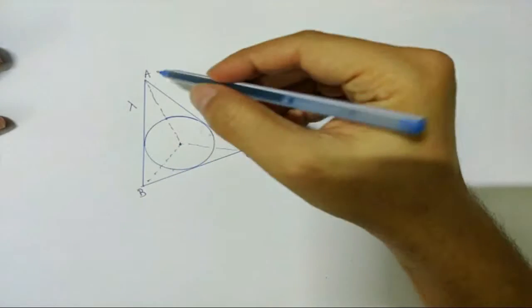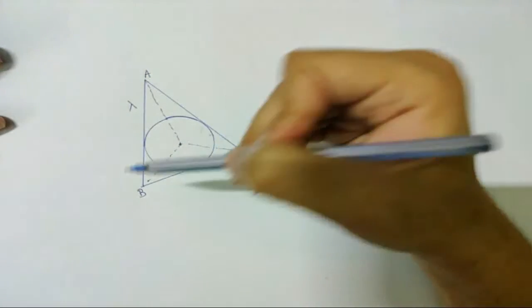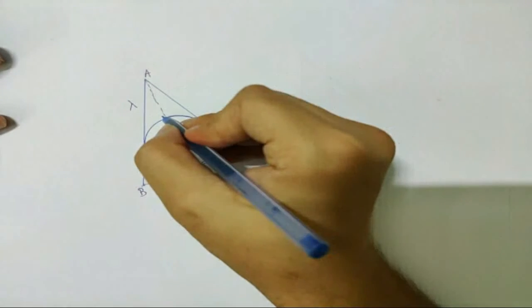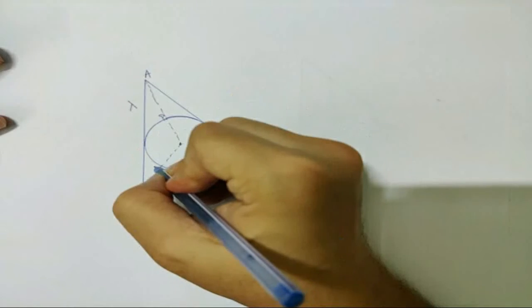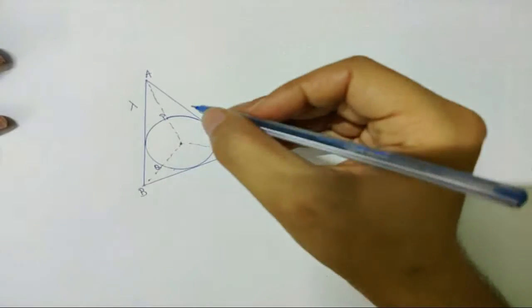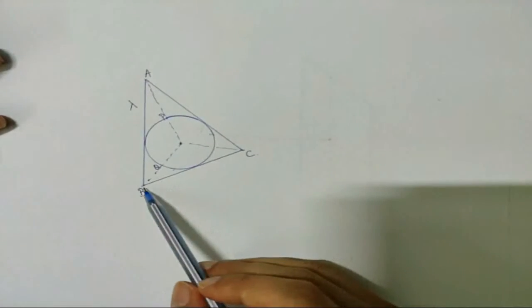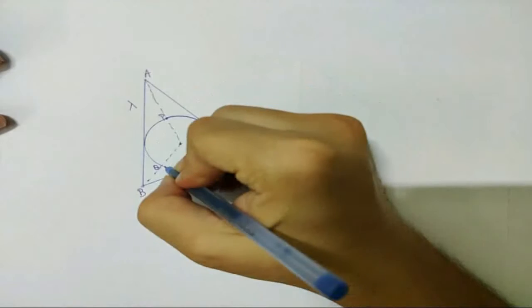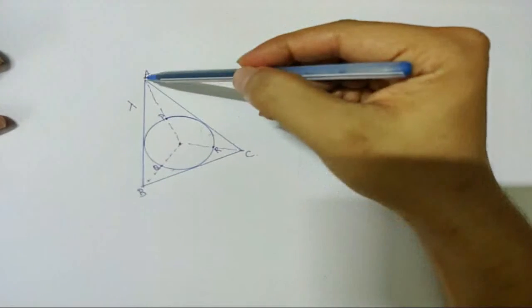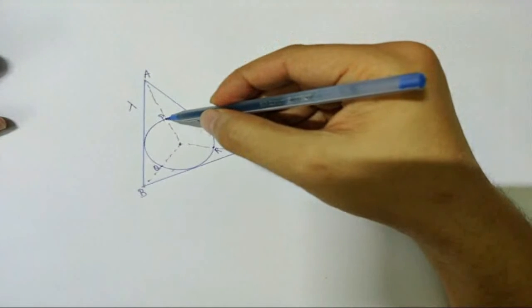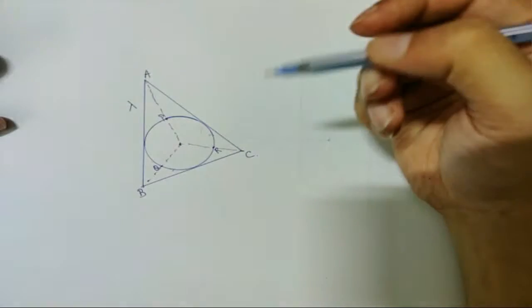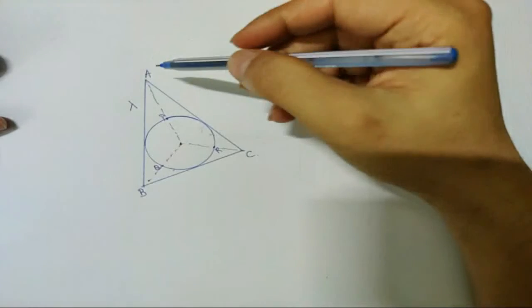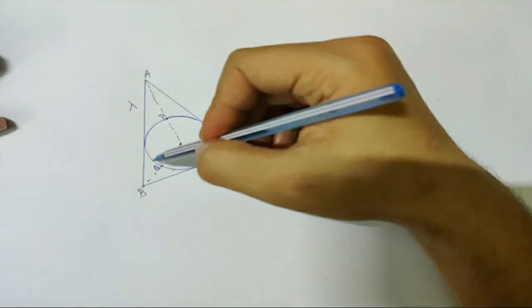So due to wire AB, the field must be identical to the field due to wire PQ, and this PQ wire is a circular arc. Similarly, field due to BC must be equal to the field due to QR, and finally field due to wire AC will be equal to field due to this circular wire PR.